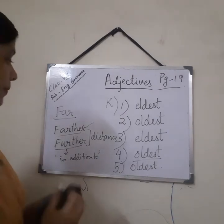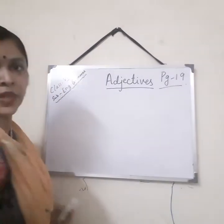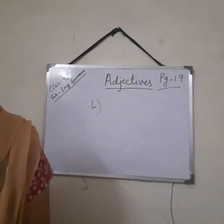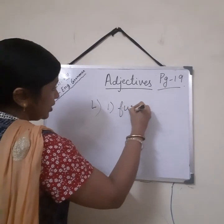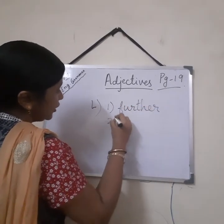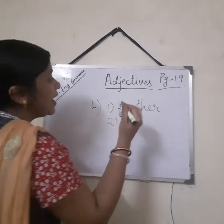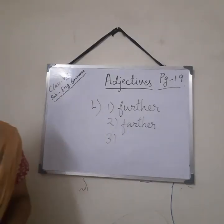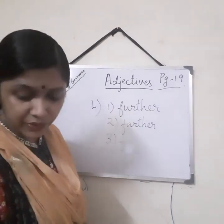Now let us solve exercise L. Number 1: 'Without any dash explanation of the committee' — obviously it will be further, meaning without any additional explanation. Number 2: 'I am too tired and cannot walk any farther' — you can write farther as well as further, both are appropriate. Number 3: 'No further orders were sent from the headquarters to the troop' — we use further, meaning no additional orders.